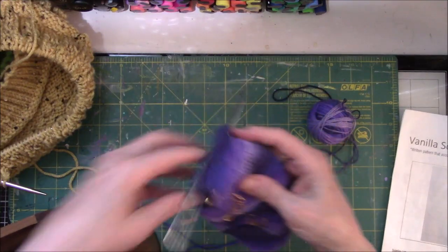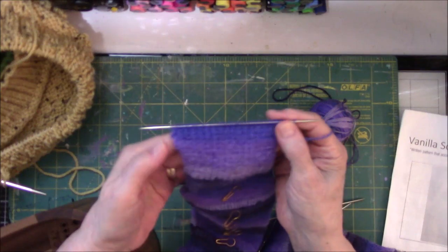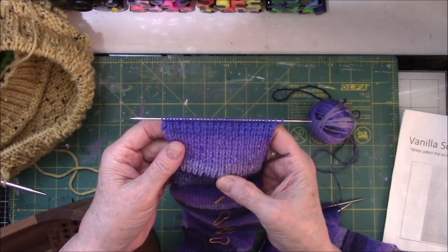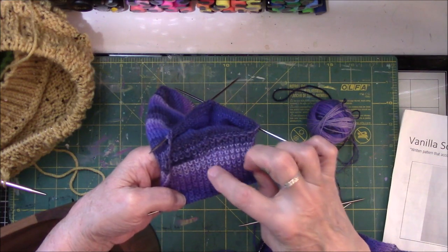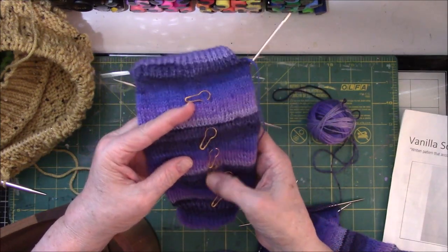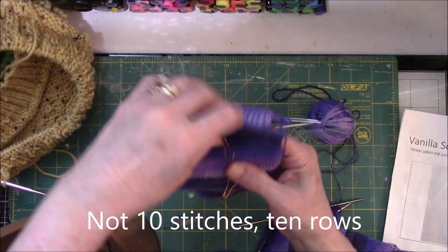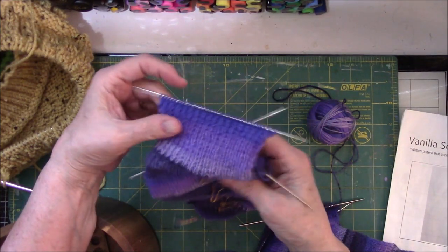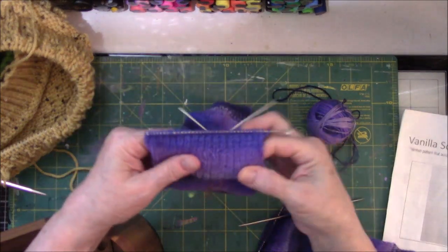So here is sock number two. And there's three needles in there because this is going to be the heel flap right here. This is the needle that has 36 stitches on it. I do 72 stitches on two point. This was 2.0. The cuff was 2.5 millimeter. I messed up. The body is a combination of needles 2.25 and 2.5. I forgot to take out some of the needles and thought, oh, it'll be fine.